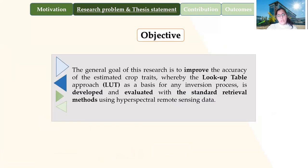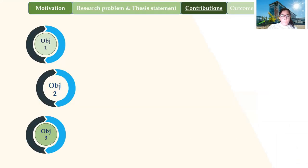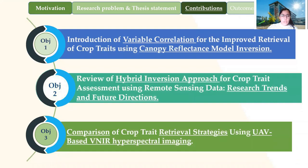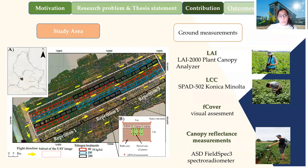The general goal of this research is to improve the accuracy of estimates by developing the lookup table approach, which is the basis for any inversion process, and evaluating it against other standard retrieval methods using hyperspectral remote sensing data. To achieve this, we specified three objectives. In this presentation, I will talk about two objectives, which have been published. Before discussing these, I would like to give an overview of the experiment, because both objectives rely on it.